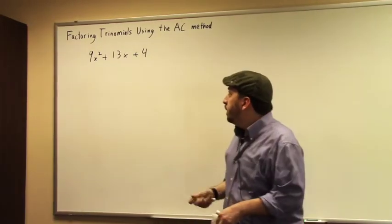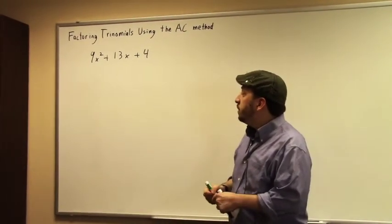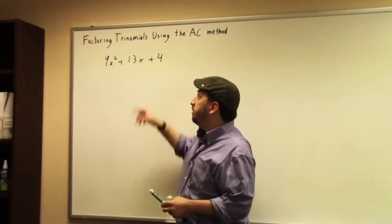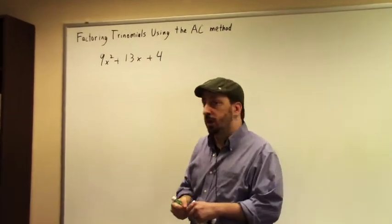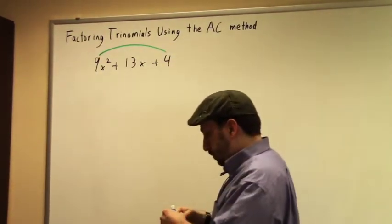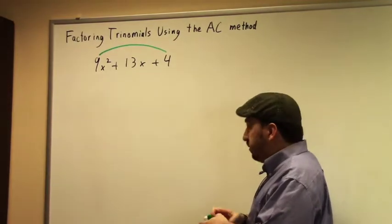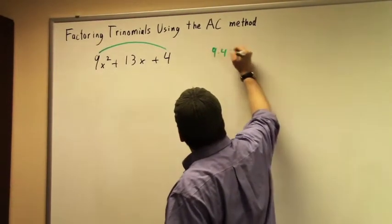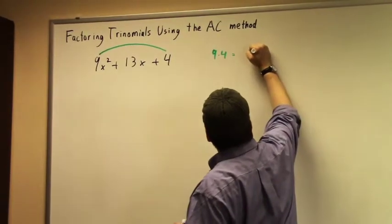For the AC method, our first step is we're going to take our first coefficient and our last coefficient, and we're going to multiply them together. So when I do 9 times 4, that's going to give me 36.